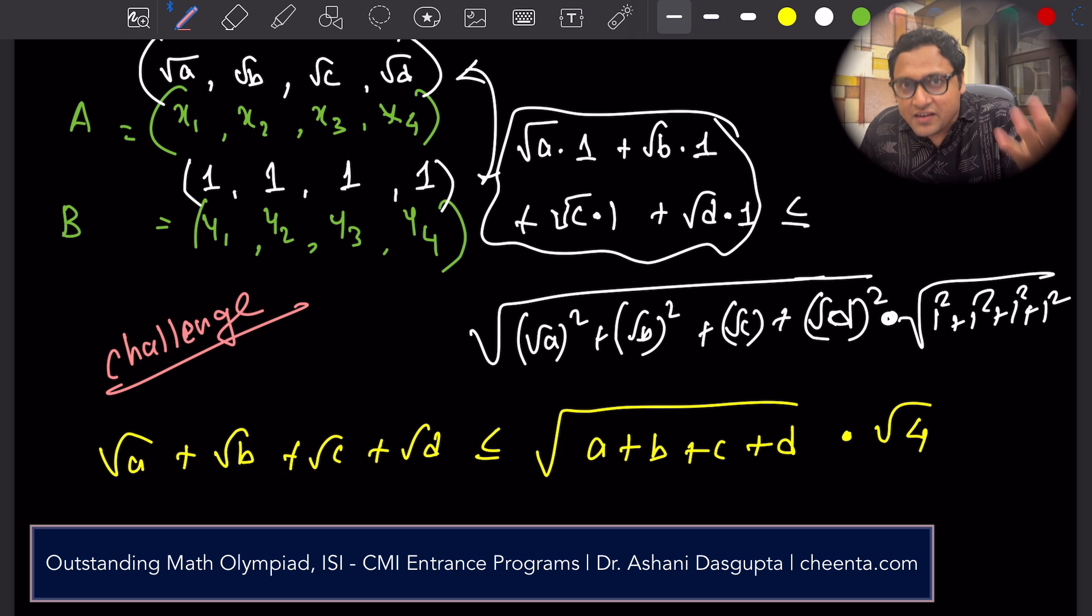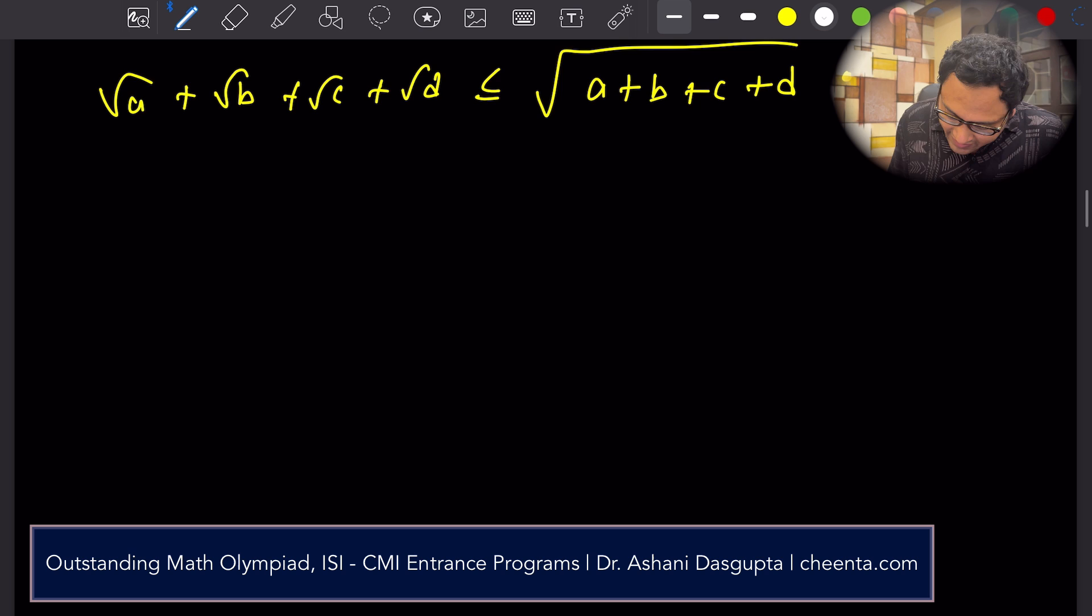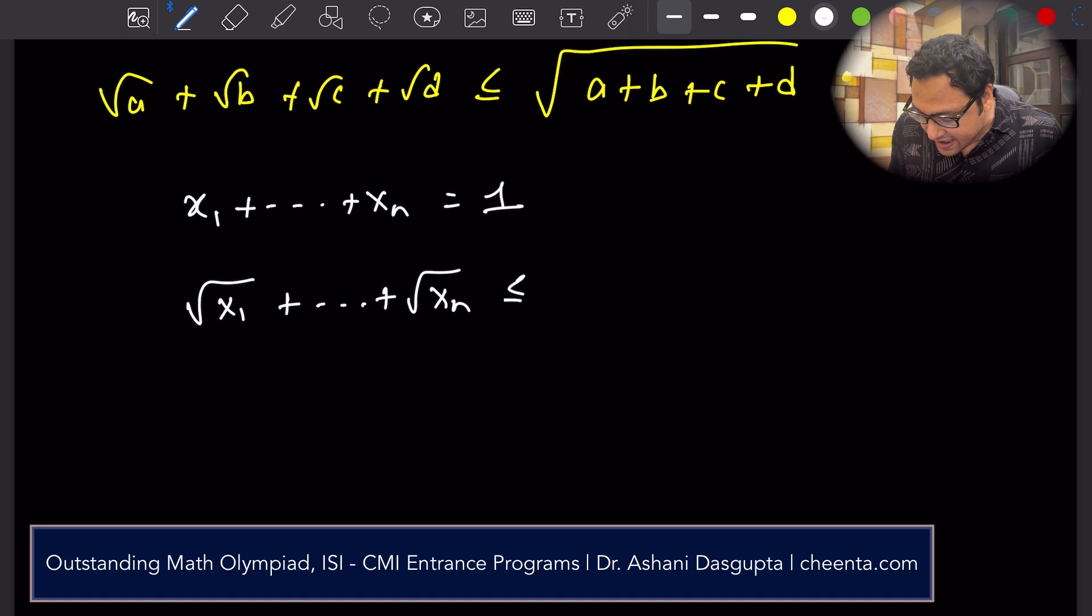So in the general case, can you tell me, can you solve the general case now? Now, if X1 up to Xn is 1, can you solve the general case and tell me what is this maximal value?